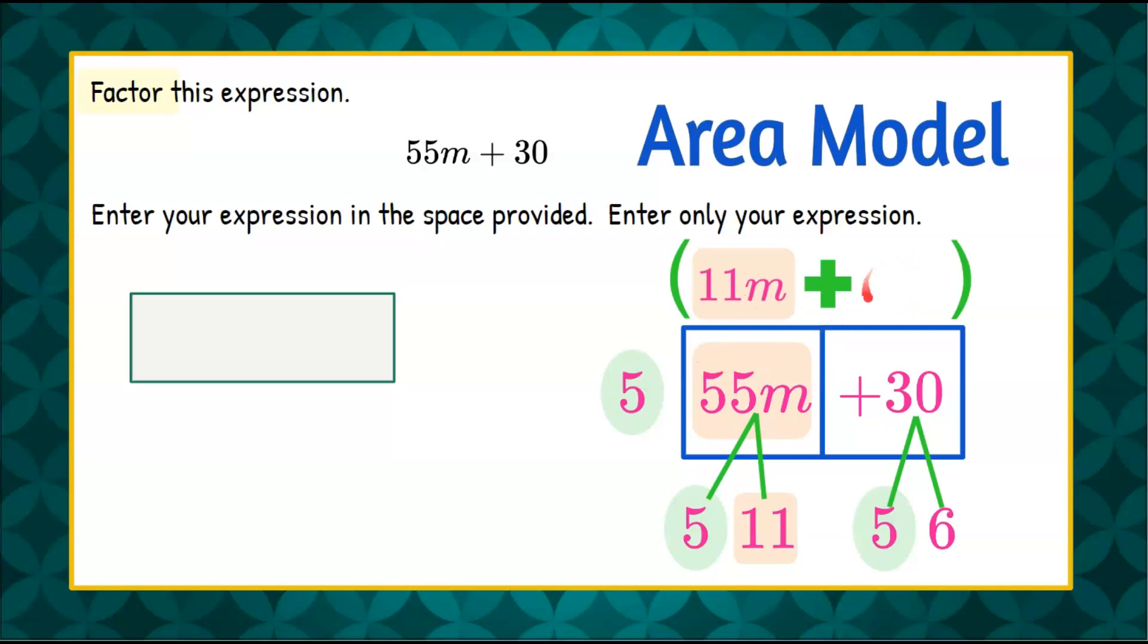Now we want to know what goes right here. So we're going to do 5 times what is 30. And that's our remaining factor from here. That's 6. So we're going to put the 6 up in here. 5 times 6 is 30.